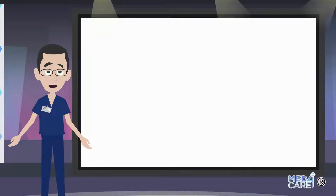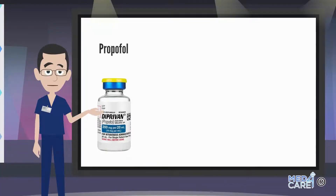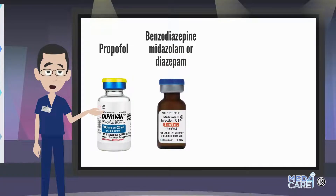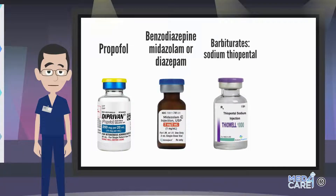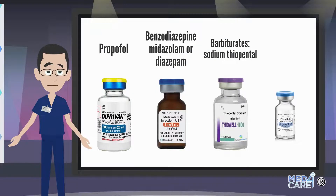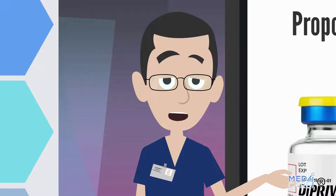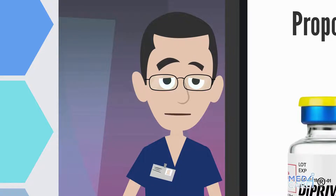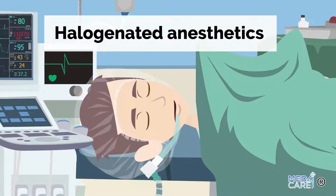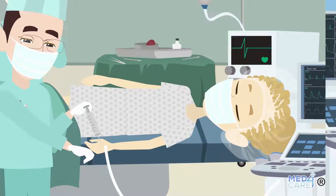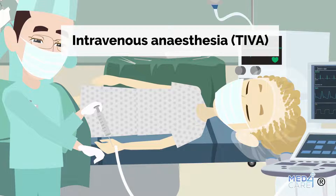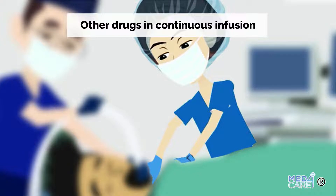Sleep induction is obtained with anesthetics like Propofol, Benzodiazepines such as midazolam or diazepam, Barbiturates such as sodium thiopental, and Etomidate. For the maintenance of general anesthesia, halogenated anesthetics are used — a kind of anesthetic gases breathed by the patient through the anesthesia machine — as well as intravenous anesthesia (TIVA) with Propofol in continuous infusion. Other drugs in continuous infusion such as lidocaine, clonidine, or other adjuvants are more rarely used.